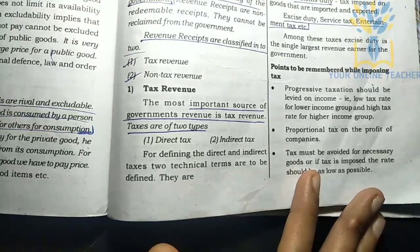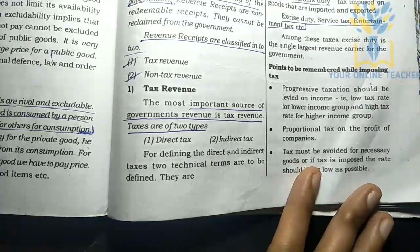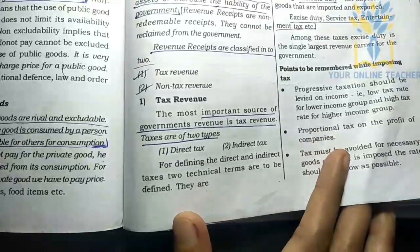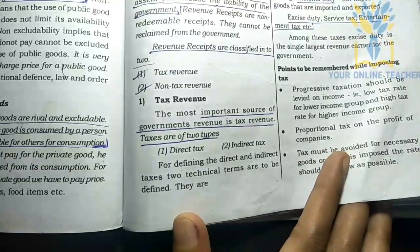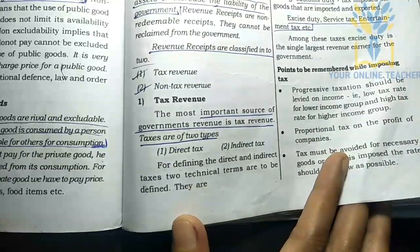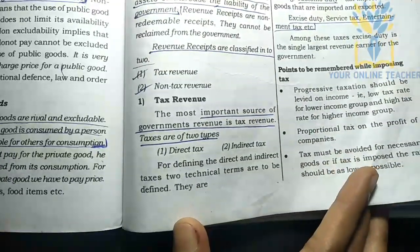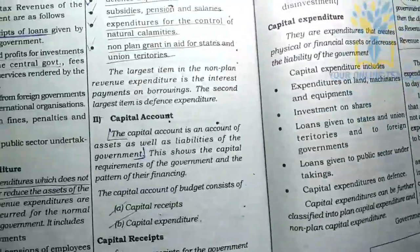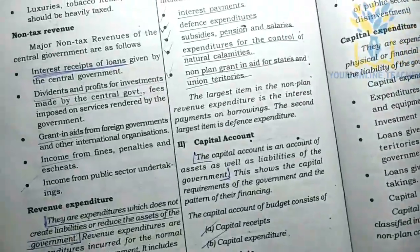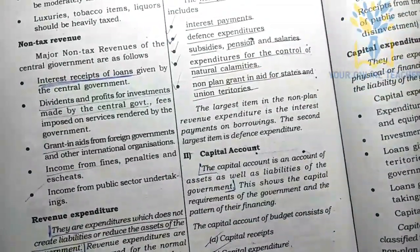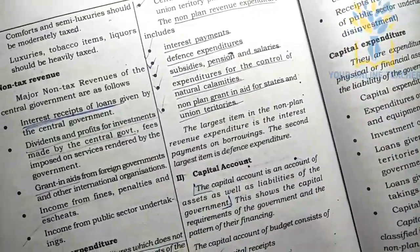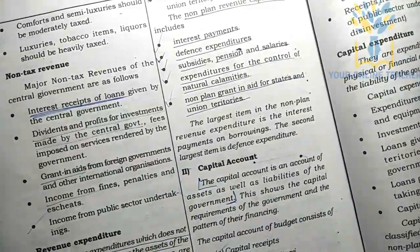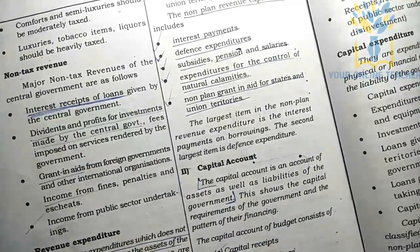Tax must be avoided on necessary goods. Comfort and semi-luxury items should be more readily taxed.